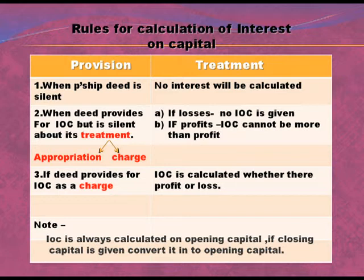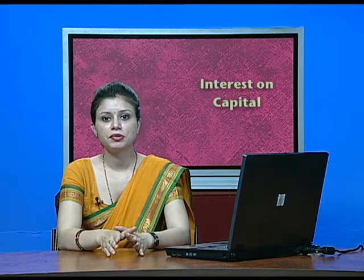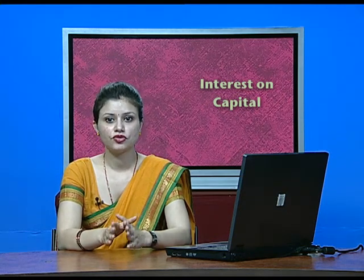Second rule: when the partnership deed provides for interest on capital but is silent about its treatment. That means when the partnership deed says to give interest on capital to the partner, but its treatment is not given. There can be two treatments of IOC — it can be appropriated or it can be used as a charge. When nothing is mentioned about the treatment, then we will focus on the appropriation.